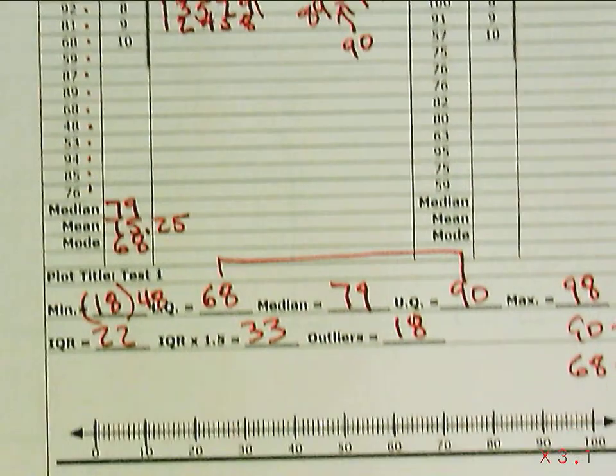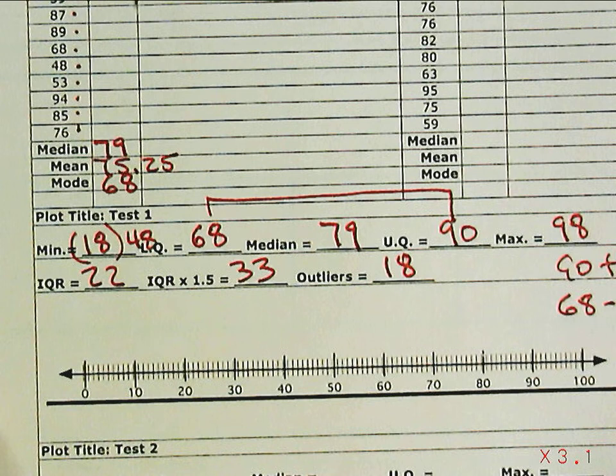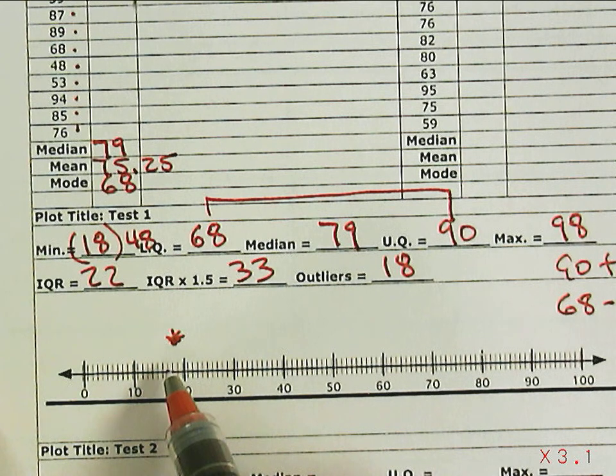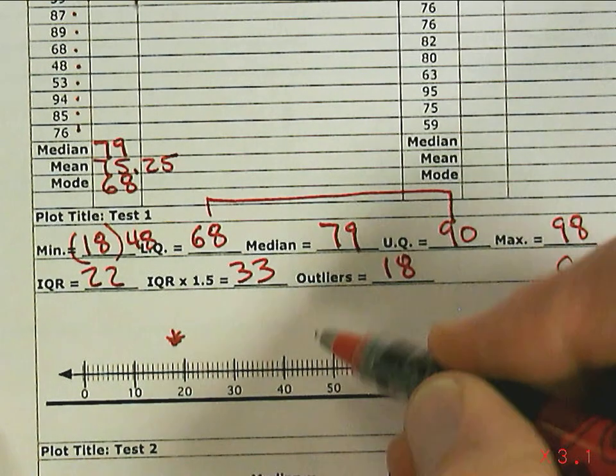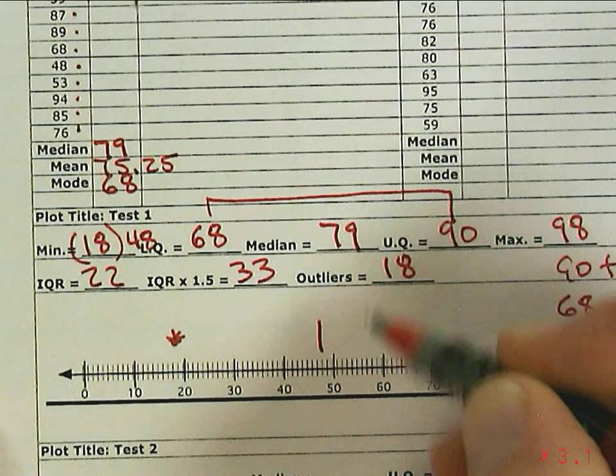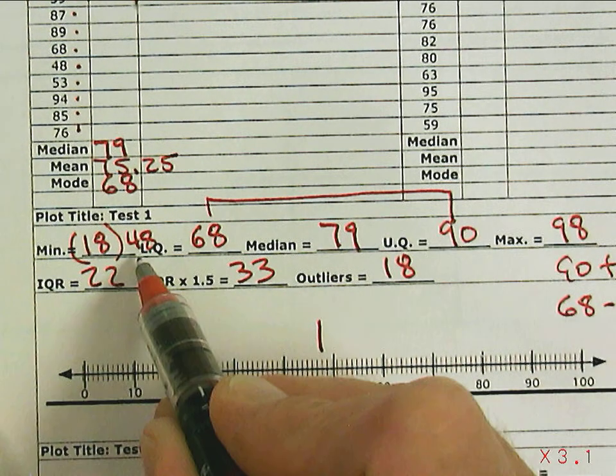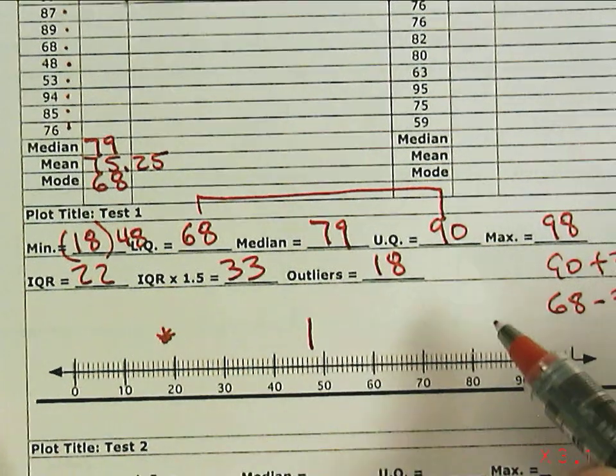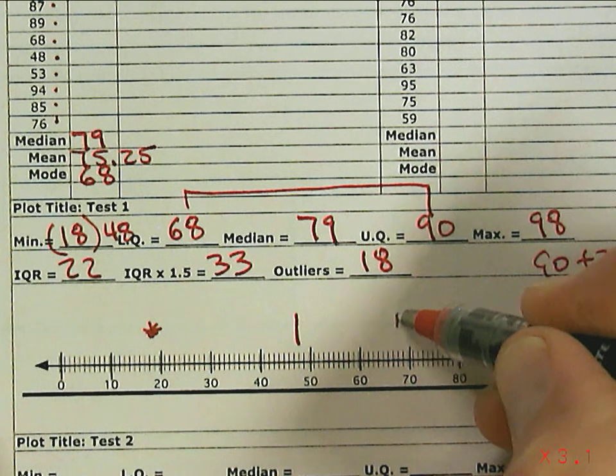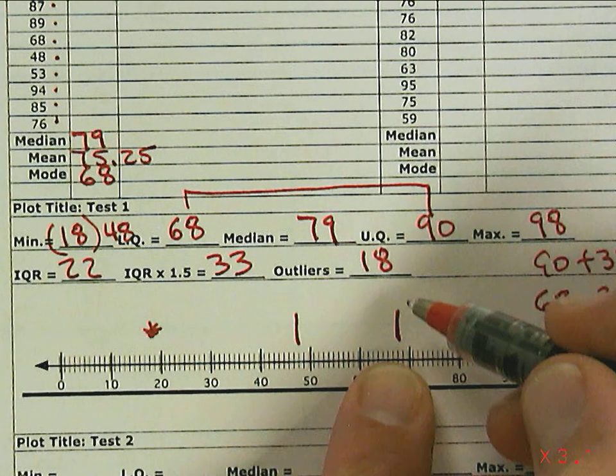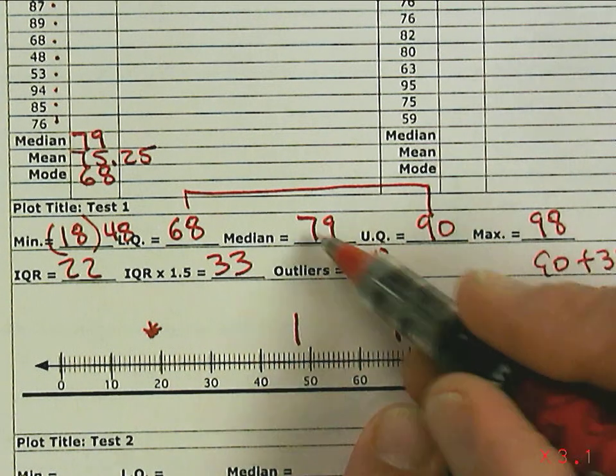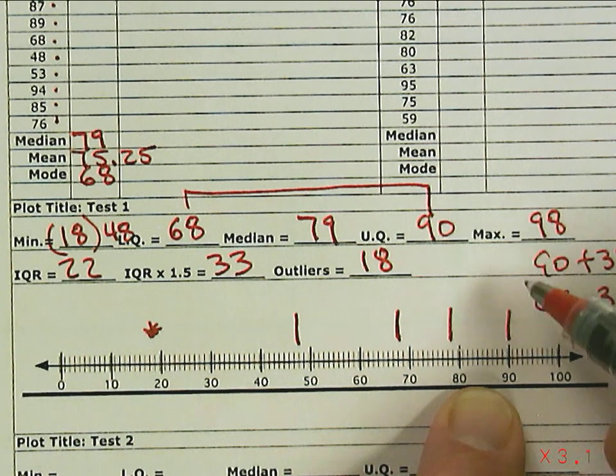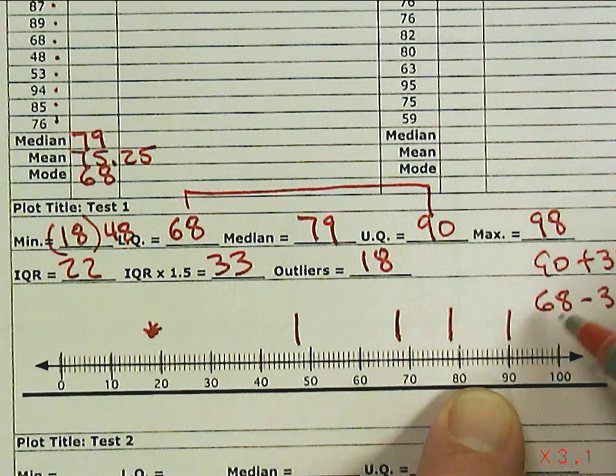On my box and whisker plot, which is the next piece I'm going to do, I'm going to take these five numbers. The minimum 18 is an outlier, so I'm going to put an asterisk right there where 18 is. The first number I'm going to mark is the 48, right here. That becomes where I mark the minimum because it's not an outlier. Then 68 is the next number, the lower quartile. 79 is the median. 90 is the upper quartile. And 98 is the maximum.